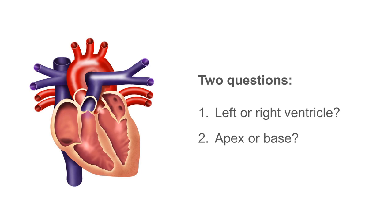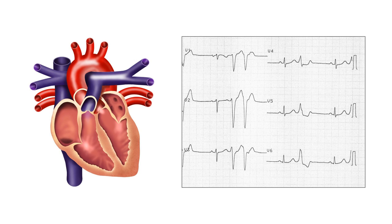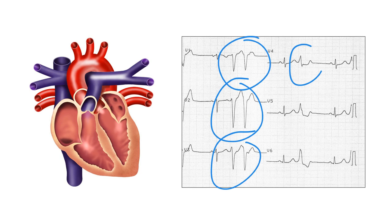There are two questions that we need to answer. The first question is: are the ventricular ectopics arising from the left ventricle or the right ventricle? Once we've answered that, we need to ask whether the ectopic beats are arising from the apex or from the base of the ventricle. To answer question one — which ventricle the ventricular ectopic beats are coming from — we need to look at the chest leads, that's leads V1 to V6, and look at the morphology of the ventricular ectopic beats. What we want to know is whether these ventricular ectopics have a left bundle branch block or a right bundle branch block morphology.